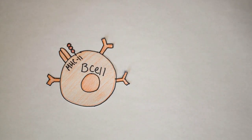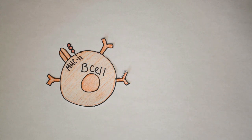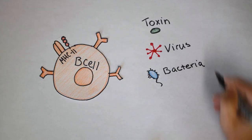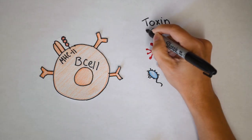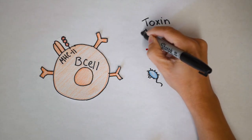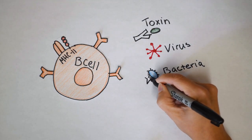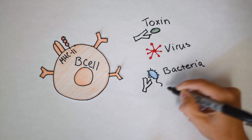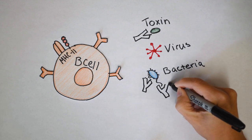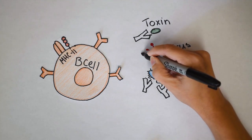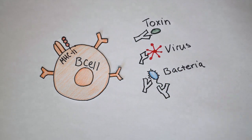Before I explain what antibody dependent enhancement is, you need to know where antibodies come from, and they come from B cells here in orange. B cells are created in your bone marrow and typically spend their life in your lymph nodes. So what do antibodies do? They can do a number of things for you: number one is binding to toxins, number two is binding to bacteria, and number three is binding to viruses. So when an antibody binds to something, it stops it from entering your cell. This is called neutralization.